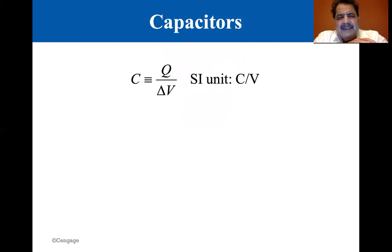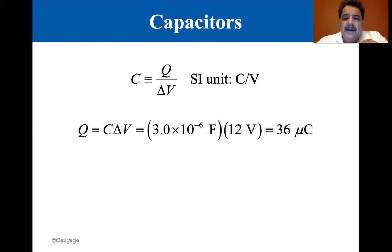The capacitor is defined as the charge divided by delta V, the voltage, and the units are coulombs per volt. Q is charge, delta V is volts. So the SI unit is coulombs per volt, and there's a value called farad. So Q equals the capacitance times the voltage.